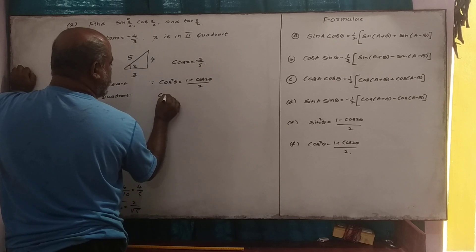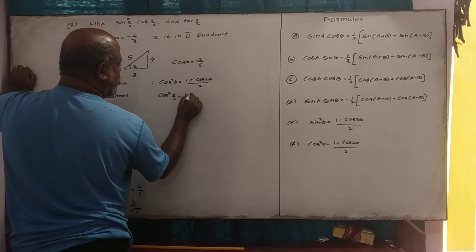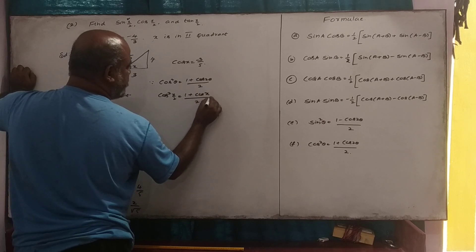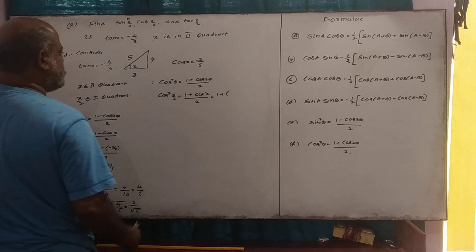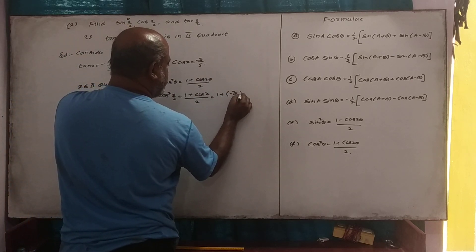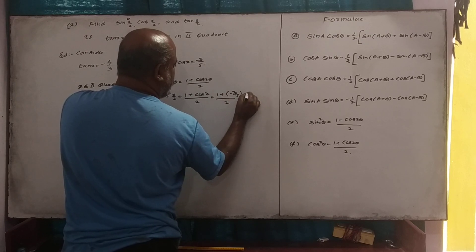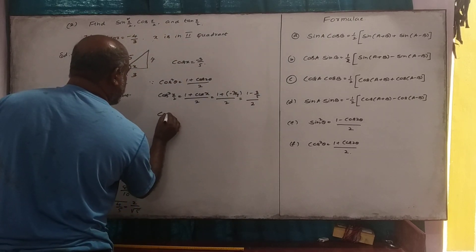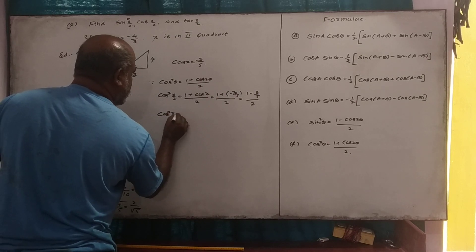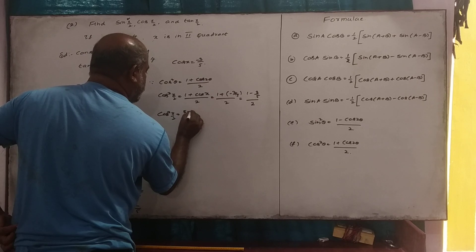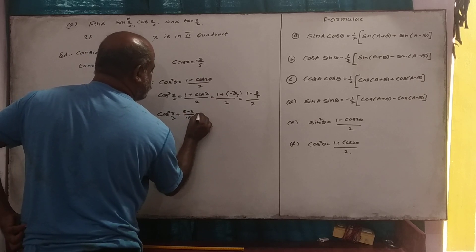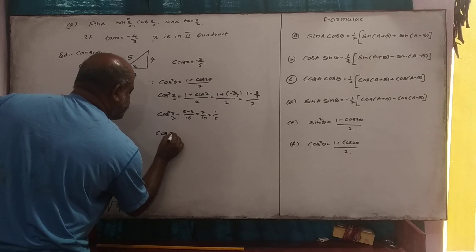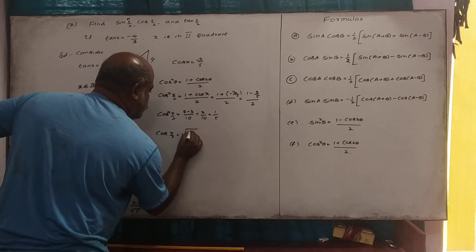And then cos squared x by 2 is equal to 1 plus cos x divided by 2. Substituting: 1 plus cos x, where cos x is minus 3 by 5, divided by 2. So 1 minus 3 by 5 divided by 2 gives cos squared x by 2 is equal to 1 over 5.